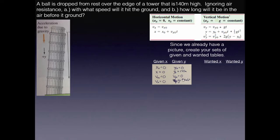Since we're dropping it from rest, the initial vertical velocity vy₀ = 0. With positive downward, g = +9.8 m/s². We don't know time, so that's not in the given set. We also don't know the final vertical velocity — how fast it's going just before it hits the ground. Those are our two wanted values.